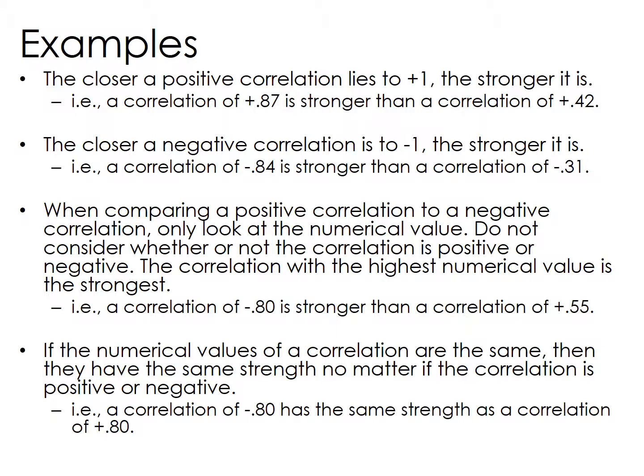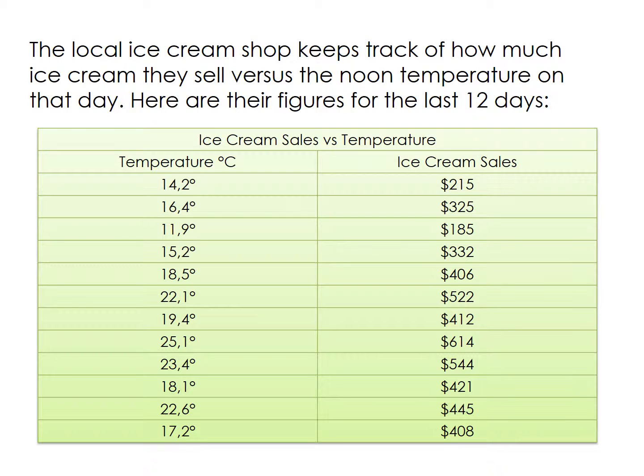For instance, a correlation of −0.80 is stronger than a correlation of +0.52. If the numerical values of two correlations are the same, then they have the same strength regardless of whether the correlation is positive or negative. For example, a correlation of −0.80 has the same strength as a correlation of +0.80.